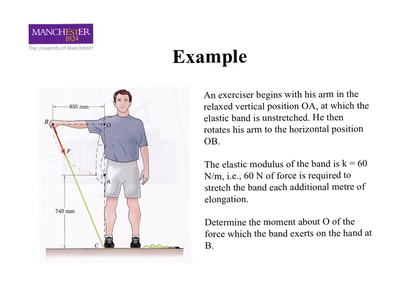In this example, there is a rubber band shown by this green line, and it is stretched from an unstretched position AC to BC. As a result, it will have a force F in it. The question is asking what is the value of the moment about point O, which is in the shoulder area here.